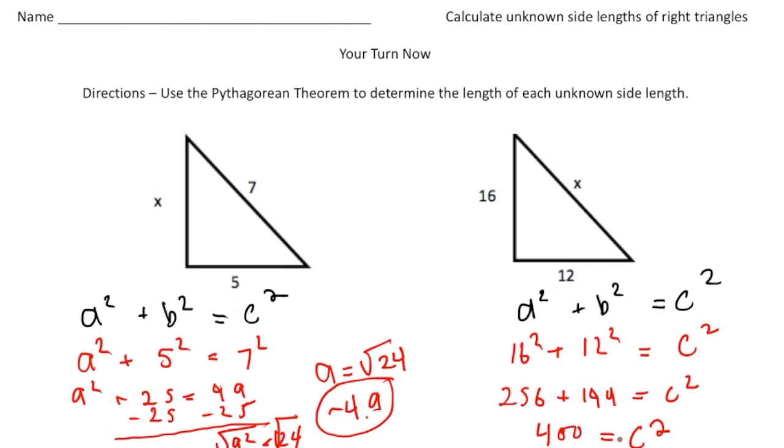And that's a nice number because when I square root both sides, 400 is the perfect square. Because the square root of 400 is 20. So c for this one is exactly 20. And there it is.